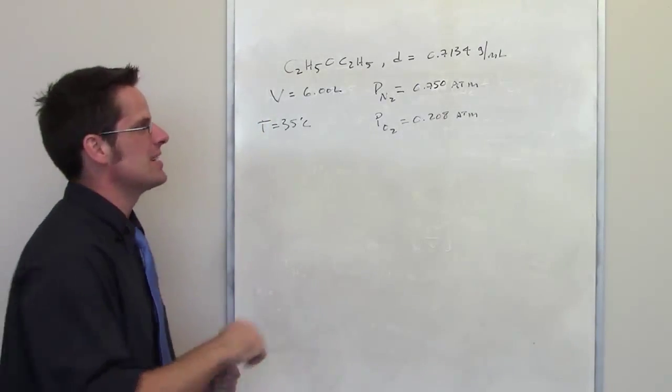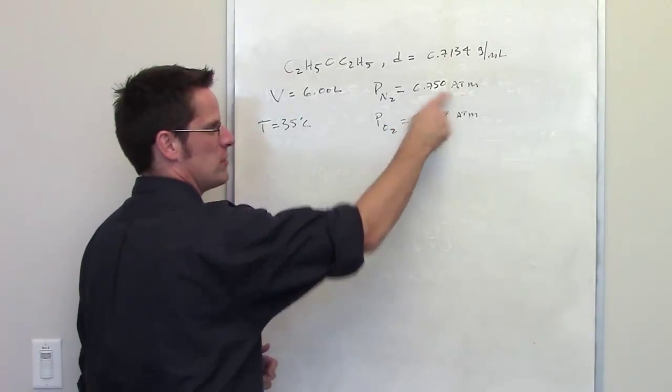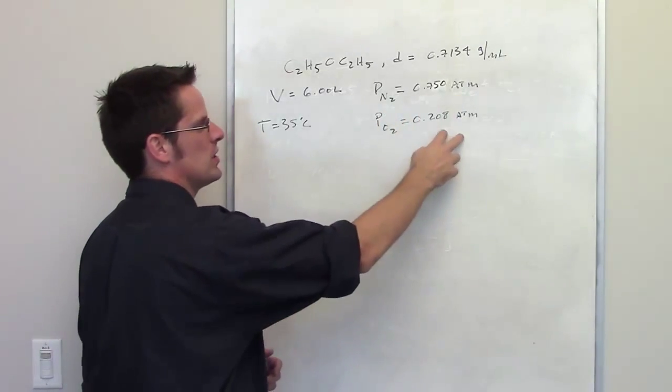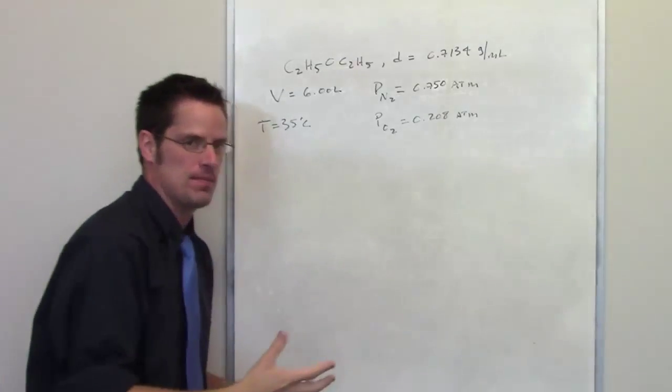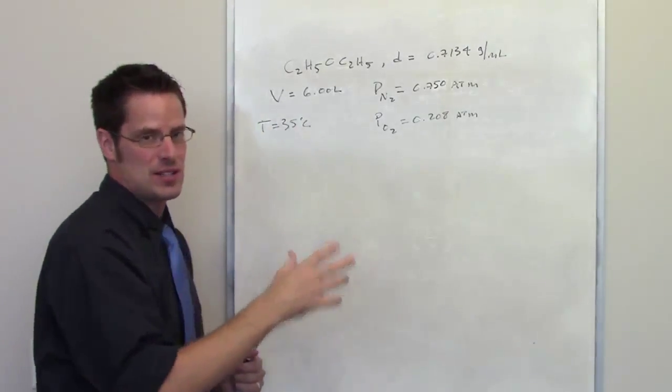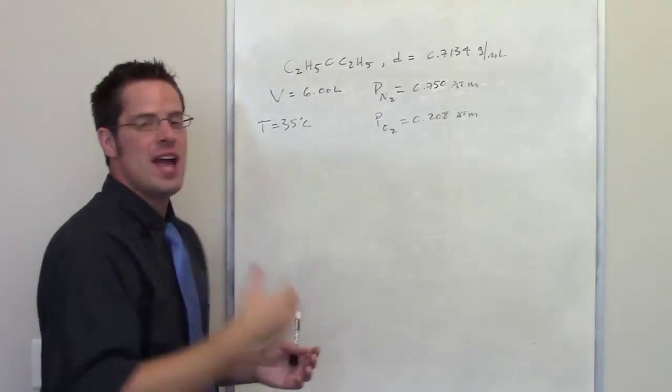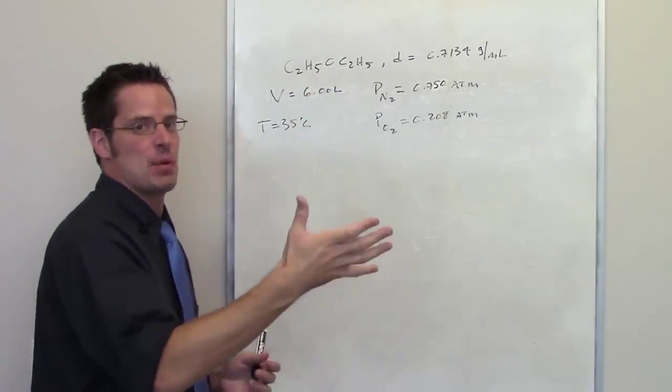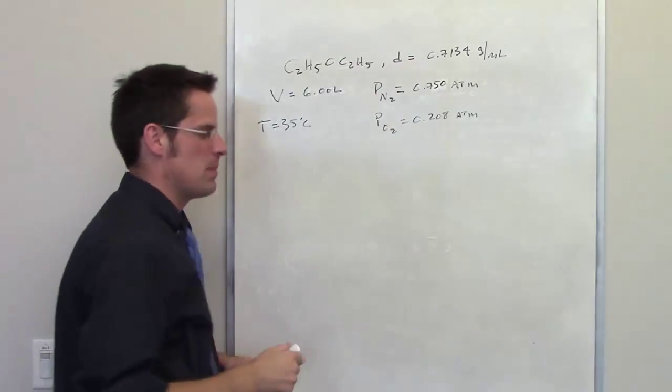In this question we're told that we have a chamber that contains 0.750 atmospheres of nitrogen and 0.208 atmospheres of oxygen. The volume of that chamber is 6 liters. The temperature is 35 degrees Celsius. Then we introduce this liquid called diethyl ether. The instant it goes in there, it evaporates. We're also given the density parenthetically.